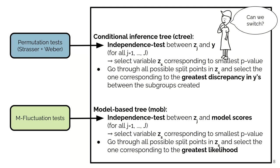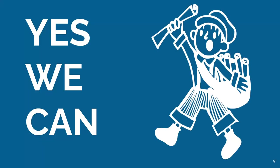And what we did for that is that we essentially wrote a new basis for both the mob algorithm and the ctree algorithm that allows the two to use each other's strategies.